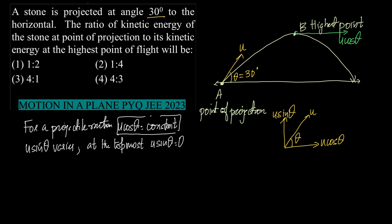To make it more clear: along the trajectory the body has both u cos theta and u sin theta. The moment it reaches the highest point, it has only u cos theta and no u sin theta. That is the key concept needed to solve this question.